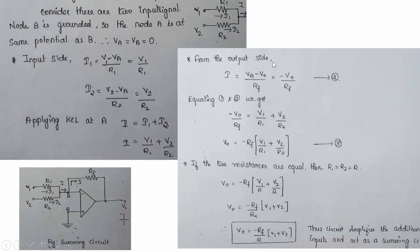Next, we find the current through the feedback resistance Rf using Ohm's law. Current flows from A to the output, so I = (Va − Vo) / Rf. Since Va = 0, I = −Vo / Rf. Both equations represent current I, so equating them: −Vo / Rf = V1/R1 + V2/R2.